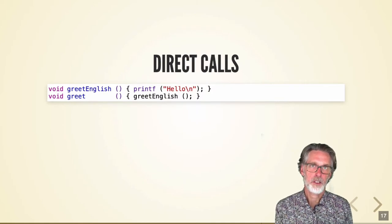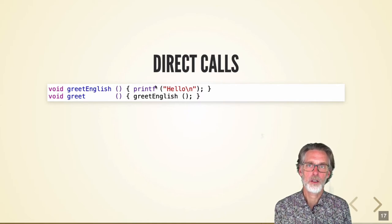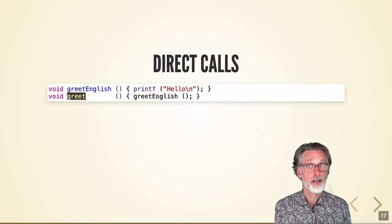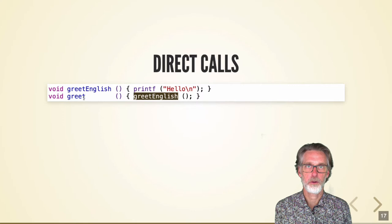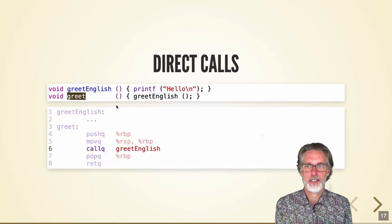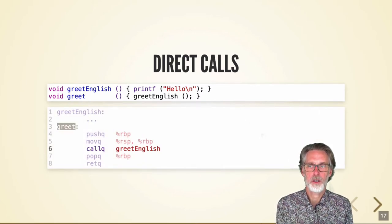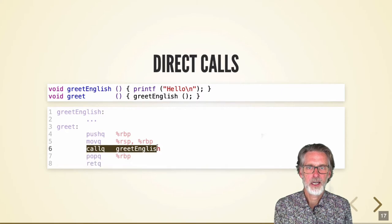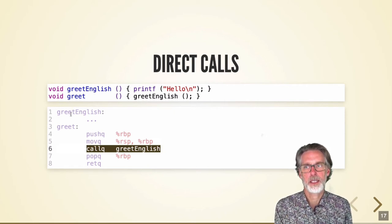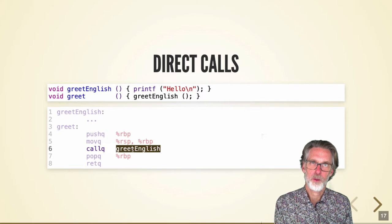When we have static dispatch, it's easy to implement in assembly language using a direct call. For example, a greet function which calls directly the greet_English method — like the only language I know is English. In the assembly language, it's just a direct call. Direct calls aren't enough to support lambda abstractions or dynamic dispatch.